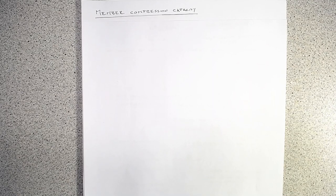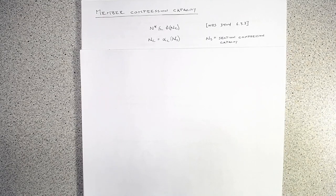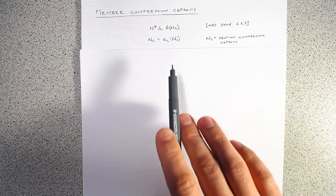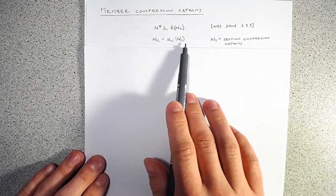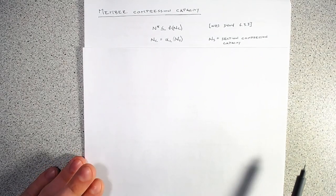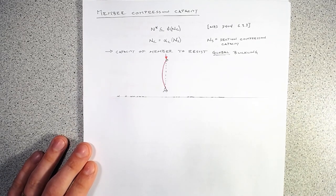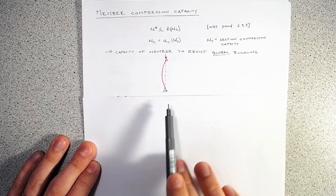Now with member compression, we're not looking at local buckling of a section anymore, but rather global buckling of the whole member. The governing equation is that N* (our demand) must be less than φ times N_c. And N_c is really just the section capacity — which we've already determined — times a multiplier alpha_c, representing the member's capacity to resist global buckling.